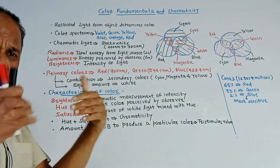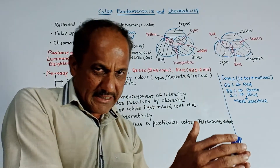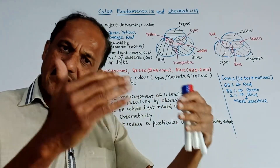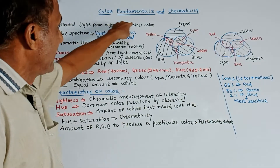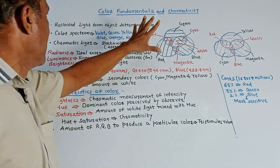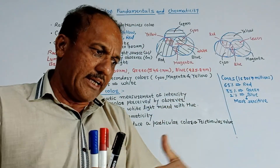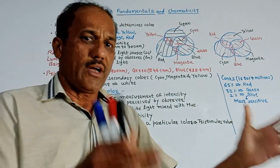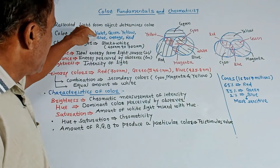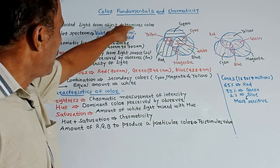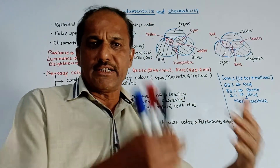Basically, we know that if you want to view some object then light is allowed to fall on that object. Part of the light gets reflected from that object and that reflected light is sensed by our eyes. So reflected light from the object determines the color of that object. As far as the spectrum is concerned, there is a color spectrum which is a broad spectrum containing violet, green, yellow, blue, orange, and red. These are the respective bands of the color spectrum.